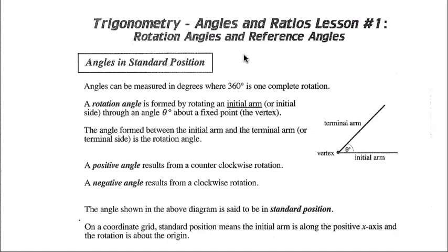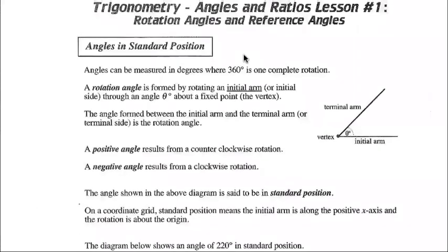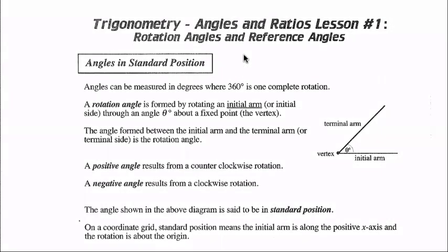Angles in standard position. Angles can be measured in degrees where 360 degrees is one complete rotation. There are two other measurements used for angles — radians and gradients — and you'll learn about those next year if you take pre-calculus 12. We know that in a full circle there's 360 degrees, so that's one complete rotation.